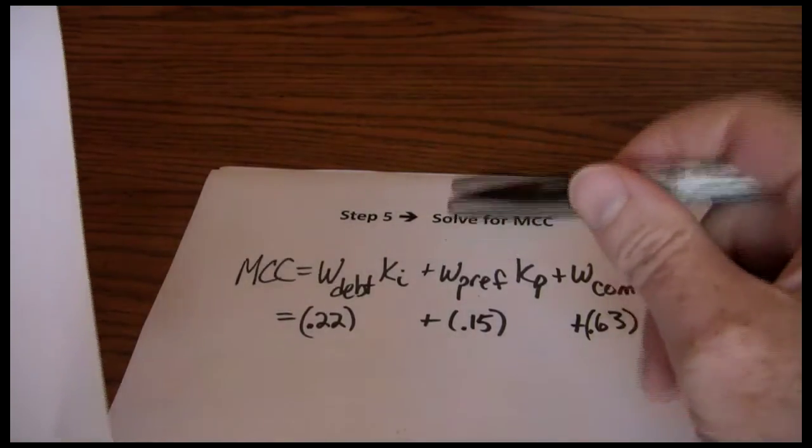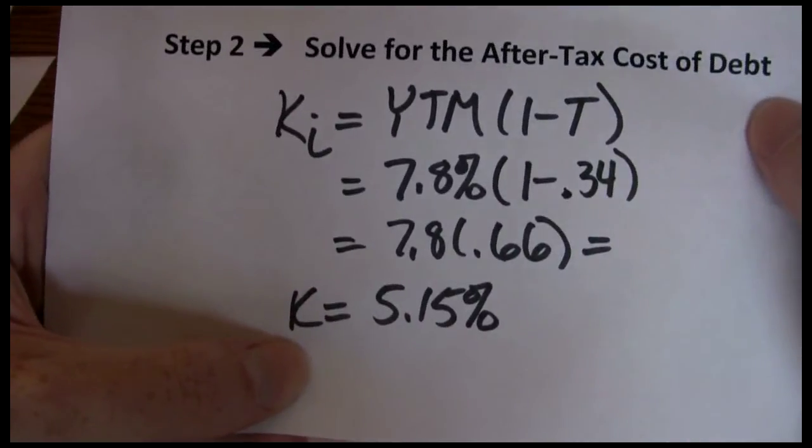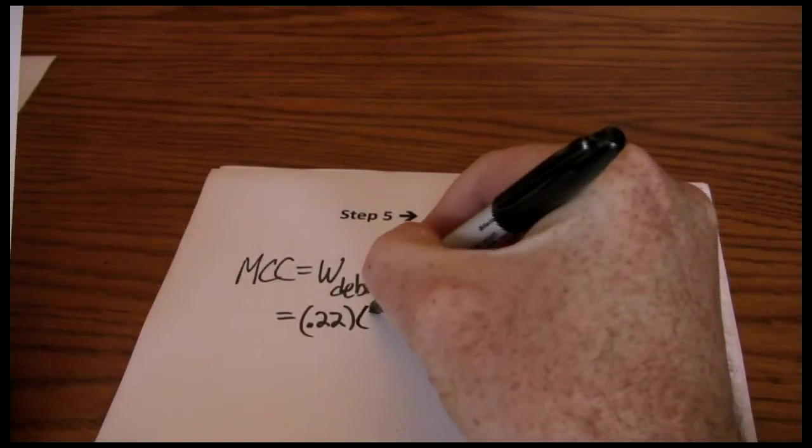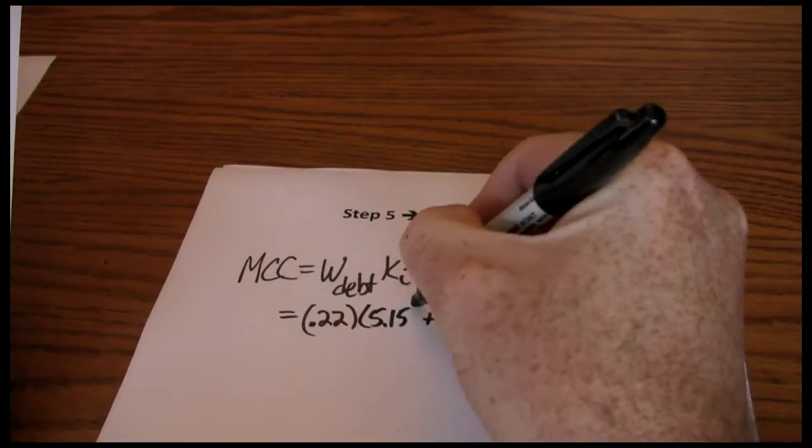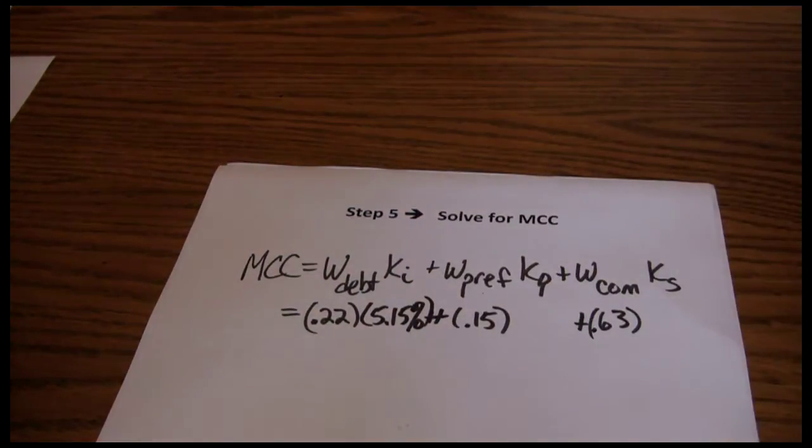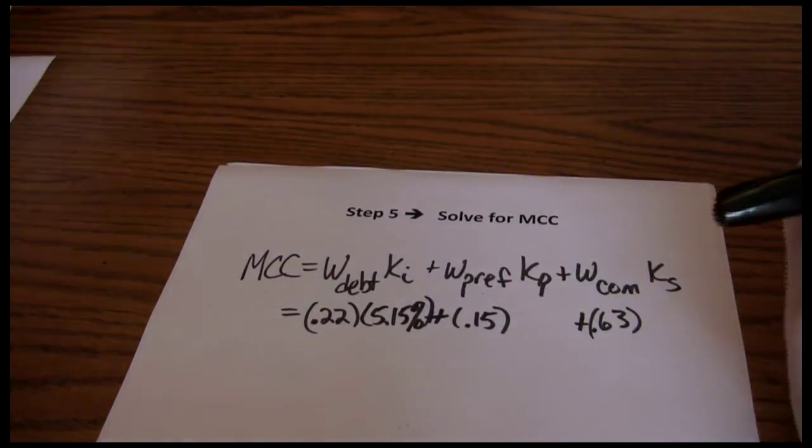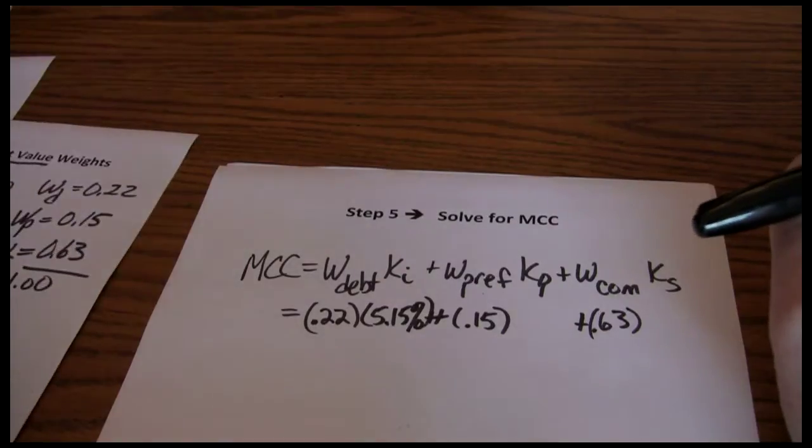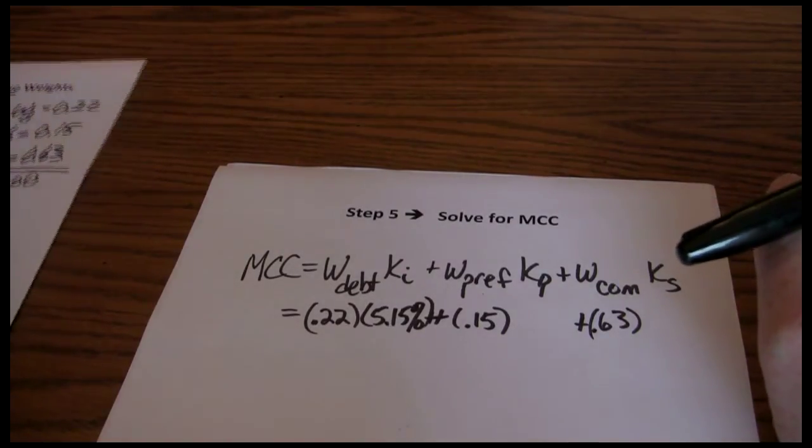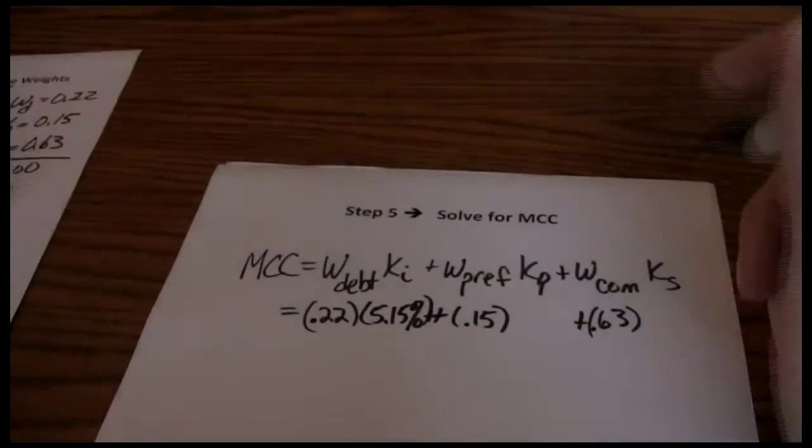Next, we need the after-tax cost of debt, which we said was 5.15%. Then we need the cost of preferred stock financing. Cost of preferred stock financing was 8.82%.